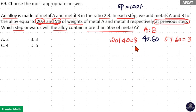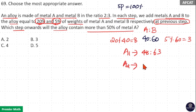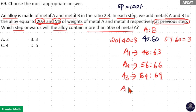Every year 8 and 3 units are added. In the first step: A becomes 40+8=48, B becomes 60+3=63. In the second step: A becomes 48+8=56, B becomes 63+3=66. In the third step: A becomes 56+8=64, B becomes 66+3=69. In the fourth step: A becomes 64+8=72, B becomes 69+3=72.